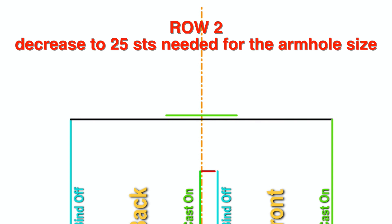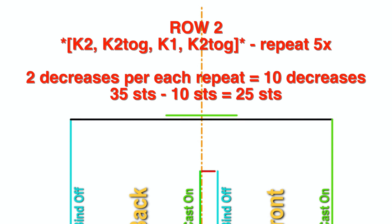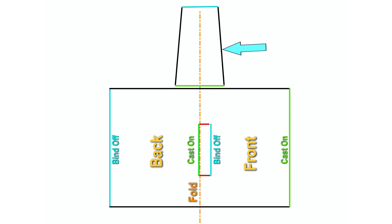In the second row I would decrease my stitches down to 25 total for my sleeve. I would work like this: knit two stitches, knit two together, knit one stitch, then knit two together — and repeat this five times. That turns seven stitches into five stitches, done five times, so from 35 stitches I end up with 25. From this point on you knit your sleeve either straight up or with decreases, depending on whether you want it hugging or wide around your wrist.